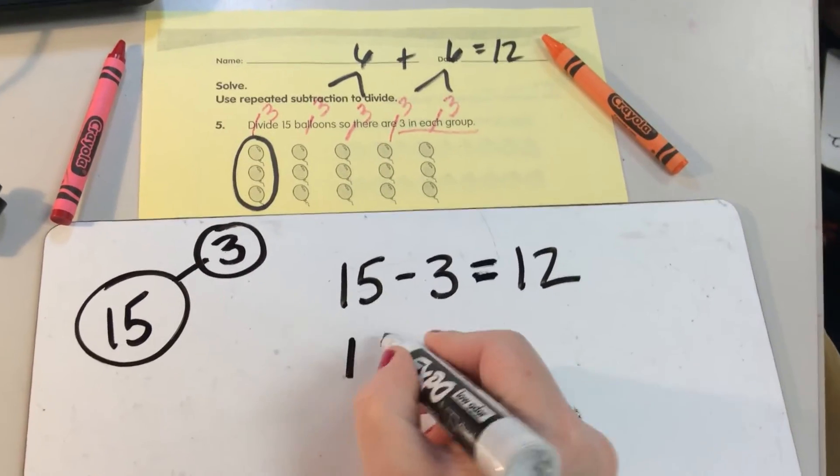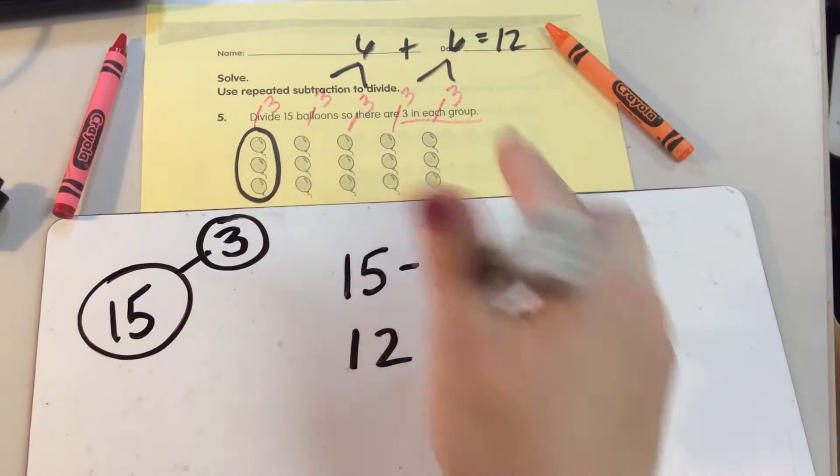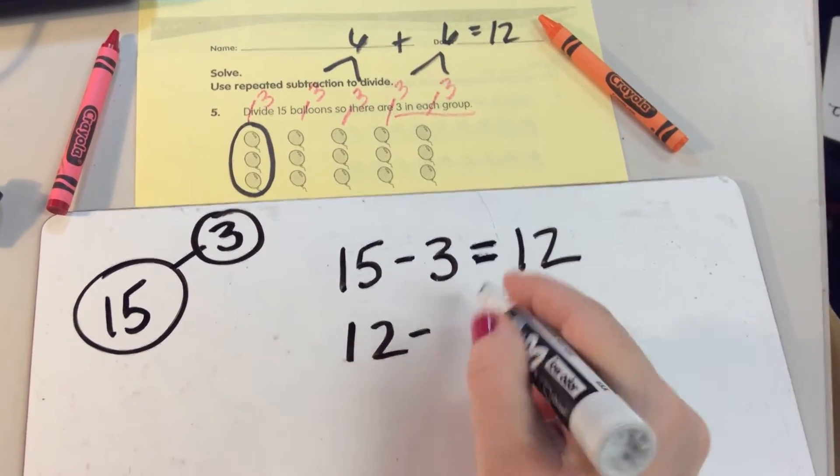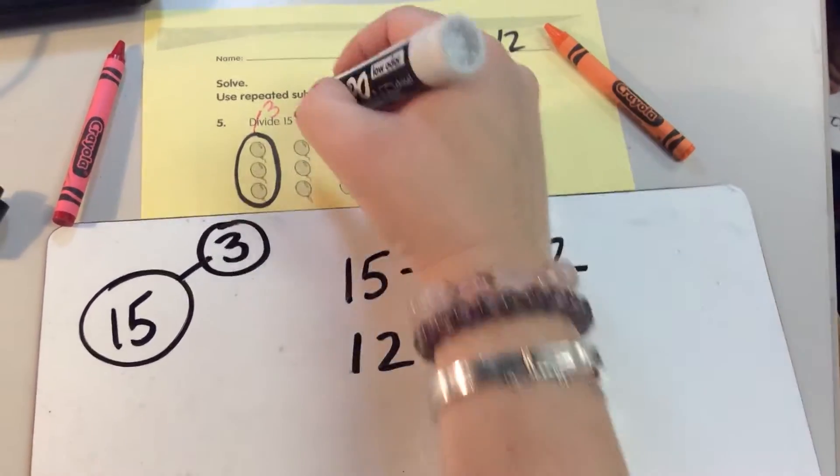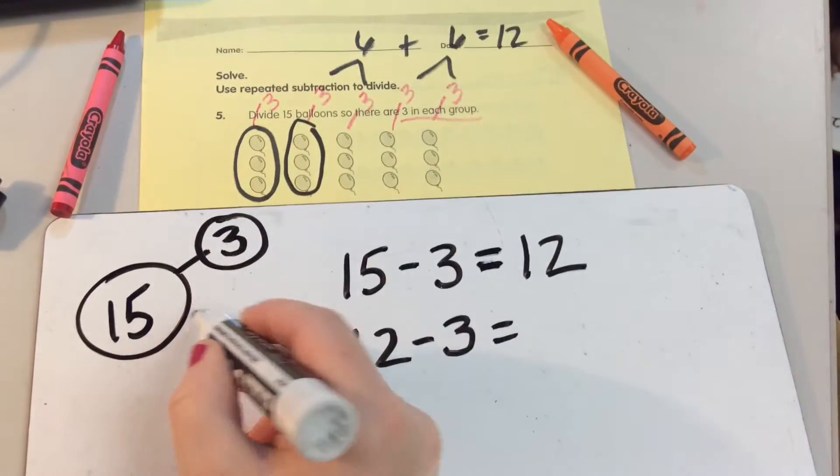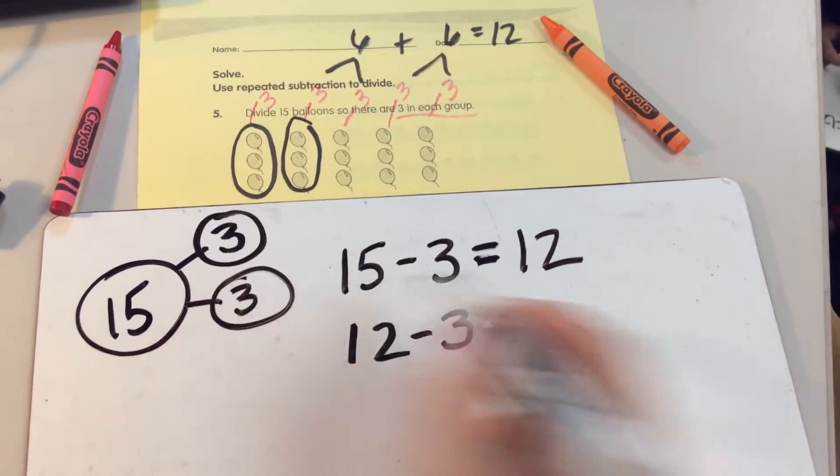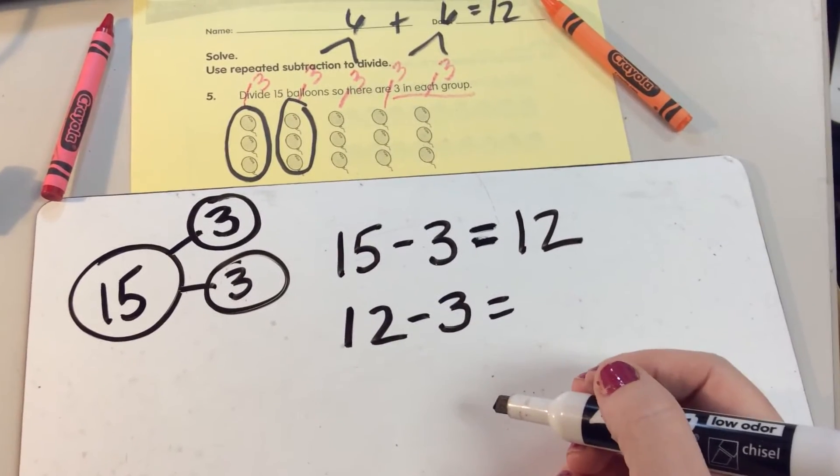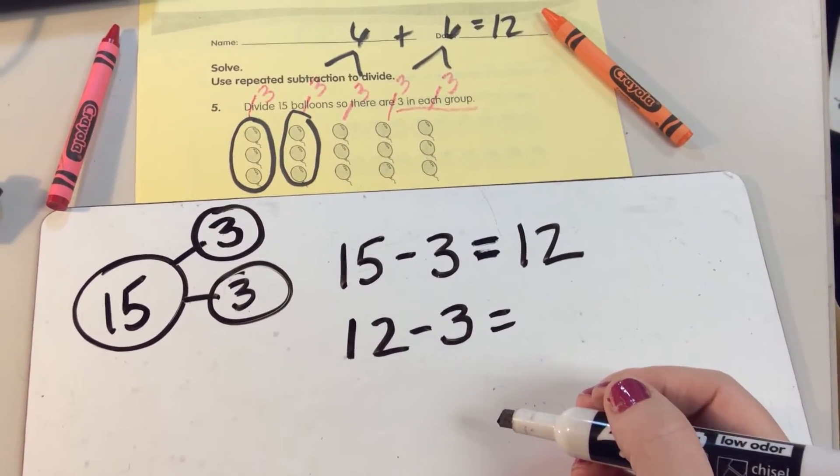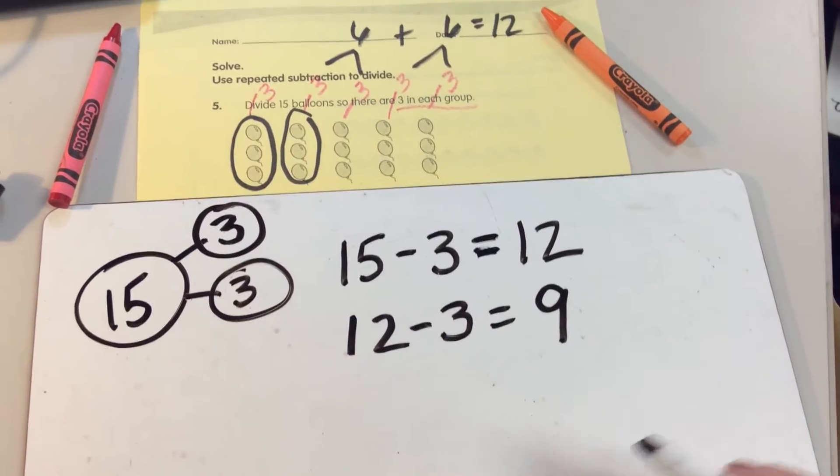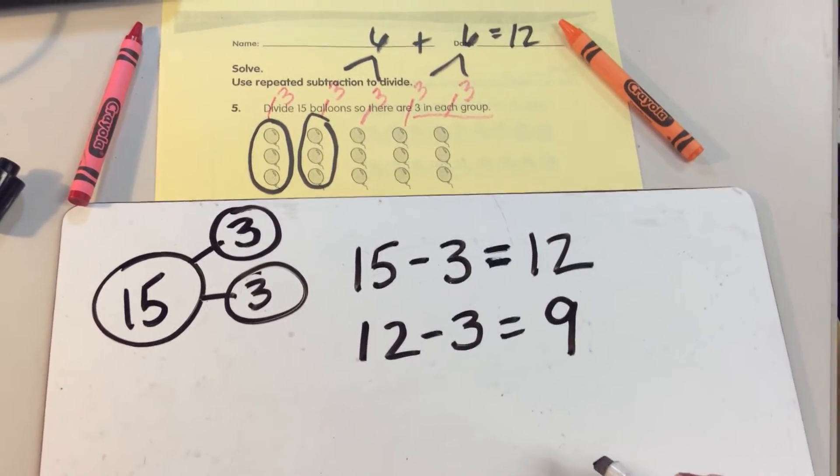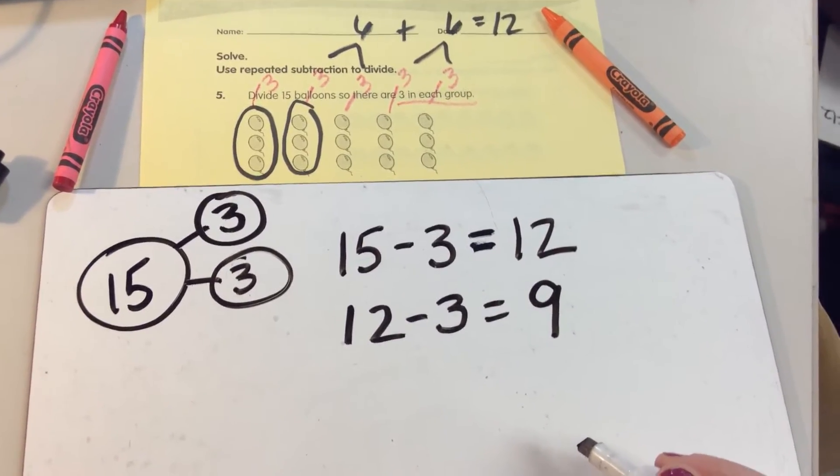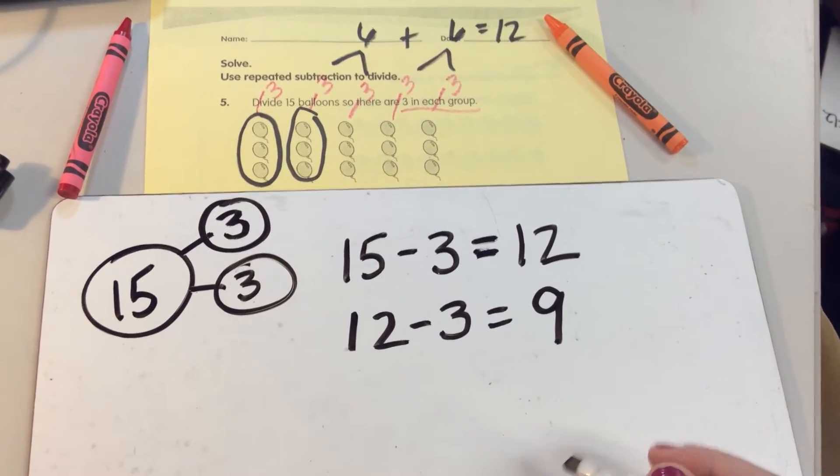Then, I say, well, I have more. I can make more groups. I have 12 now. I'm going to take away another group. There it goes, another group. Now that I took away another 3, how many are left, guys? How many balloons are left? I've got 9 balloons still left. And I'm sharing in equal groups.